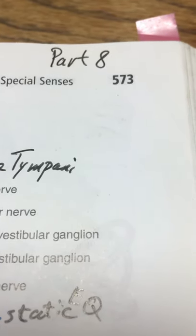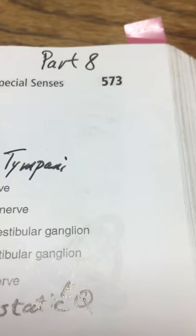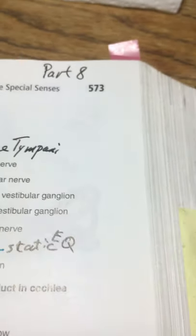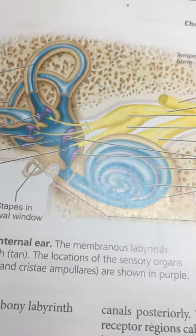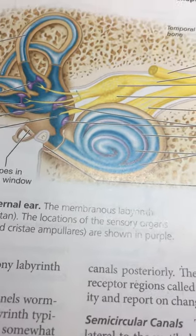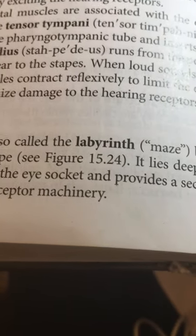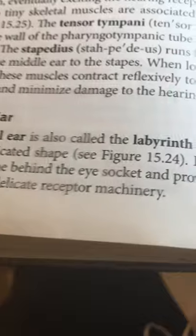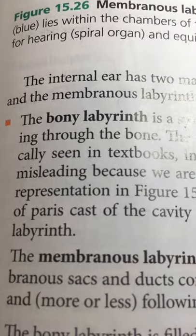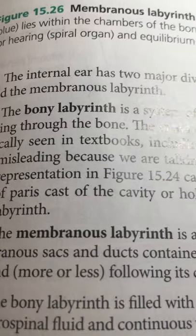This is Part 8, page 573 — Special Senses — and we're now involved with both hearing and balance. We just went through this diagram of the internal ear, described as the labyrinth, meaning the maze. That's the bony process. Within the maze itself we have both the bony and the membranous labyrinth.